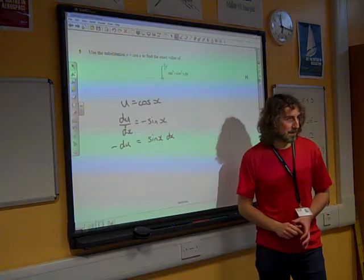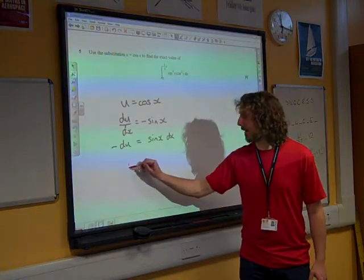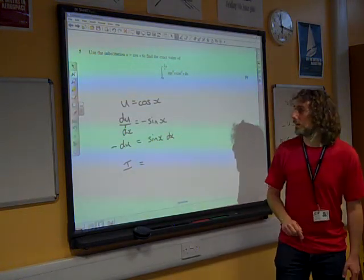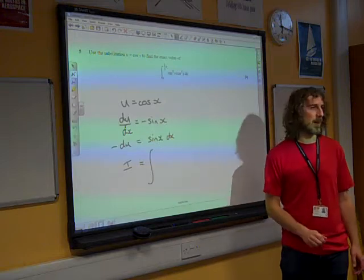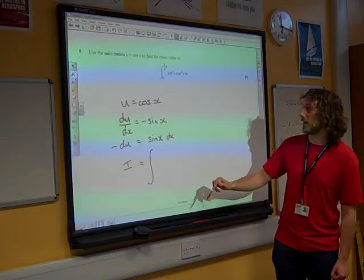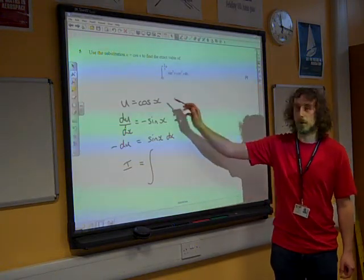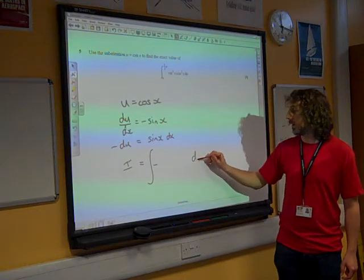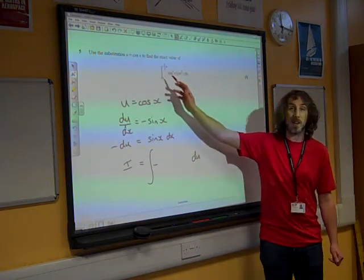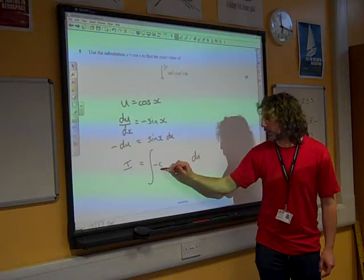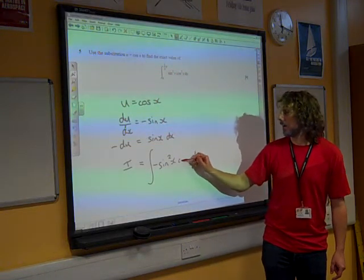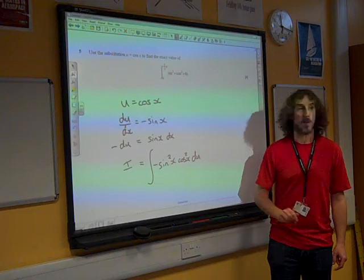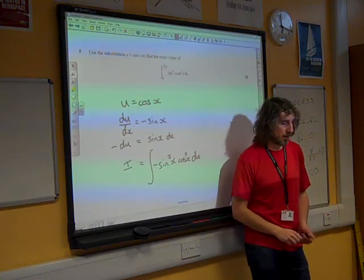If we do that substitution, the integral is going to become, let's see what we get. We'll sort the limits out in a moment. I'm replacing sin x dx with minus du. So I've got minus du. That leaves me with a sin, well let's write them. We're left with a sin squared x and a cos squared x in there that we need to work with.